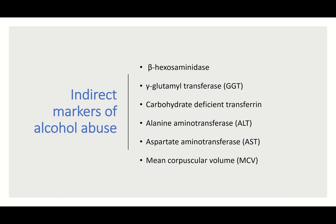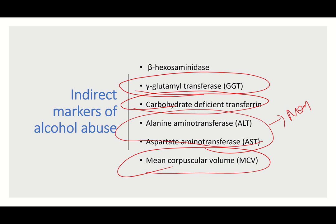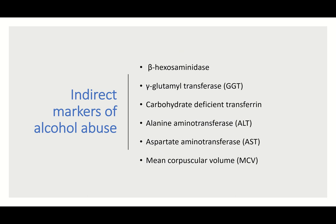Let us review the indirect markers of alcohol abuse. In exams, if asked, go for gamma-glutamyl transferase (GGT) and carbohydrate-deficient transferrin (CDT) — these are the specific markers. MCV is also a marker. Beta-hexosaminidase is also an indirect marker of alcohol abuse, but GGT and CDT are the specific ones.